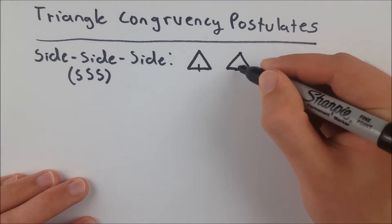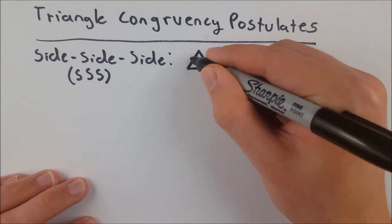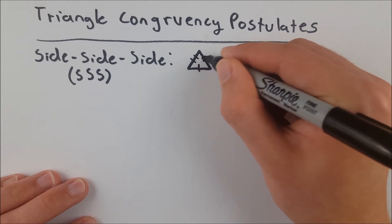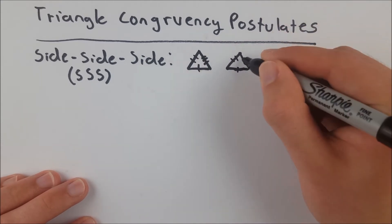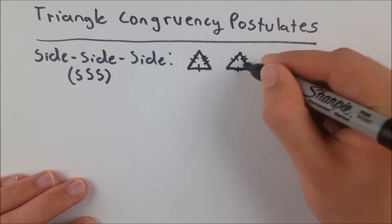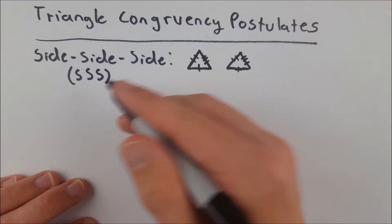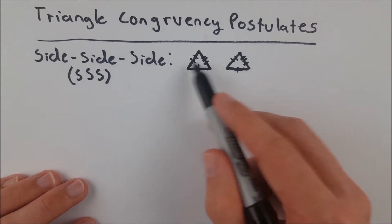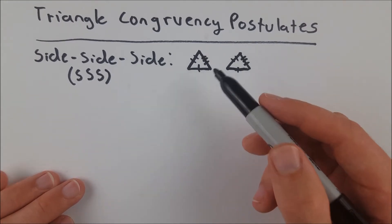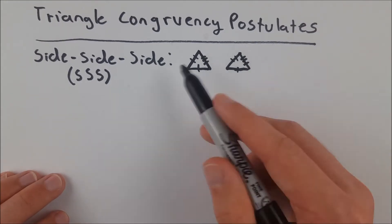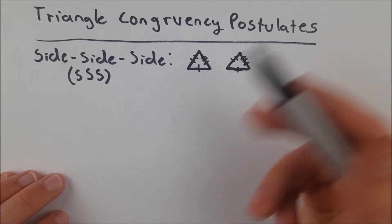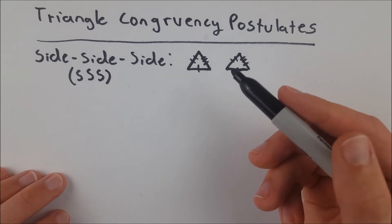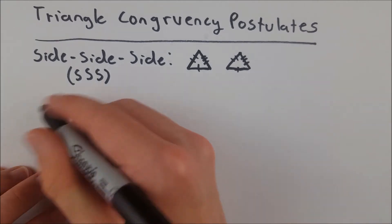So if this side's congruent to this one, this one's congruent to this one, and this one is congruent to this one, then we know by the side-side-side triangle congruency postulate that these two triangles are congruent. You just have to have all sides being congruent to that of another triangle.